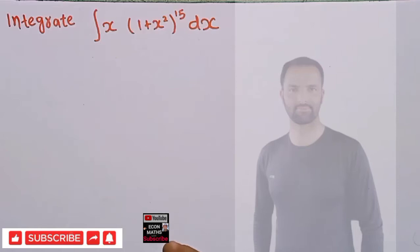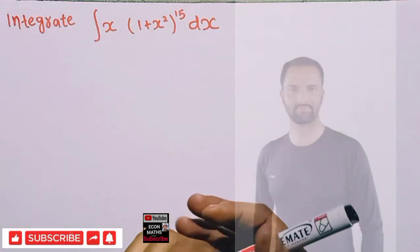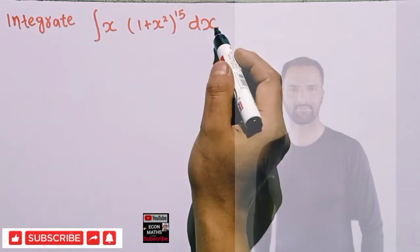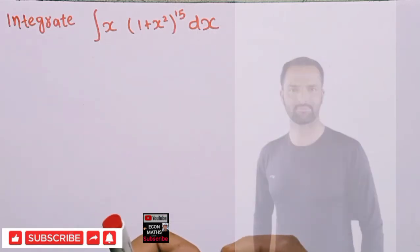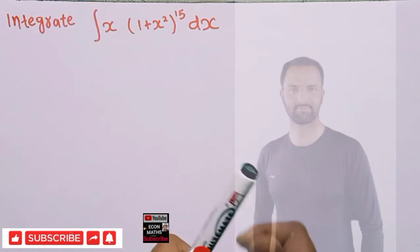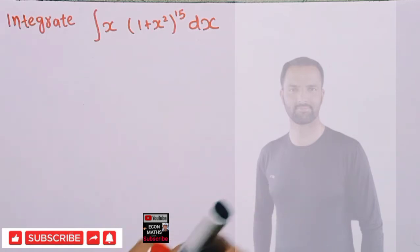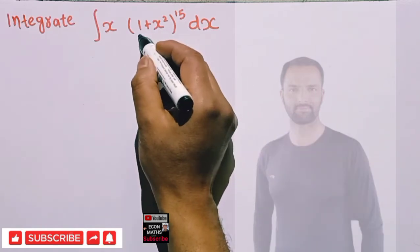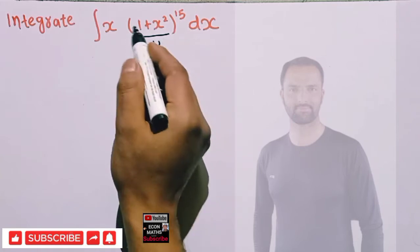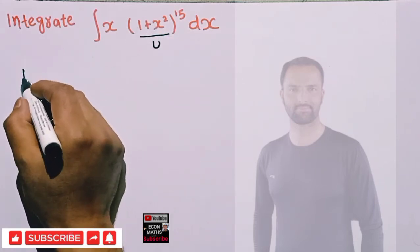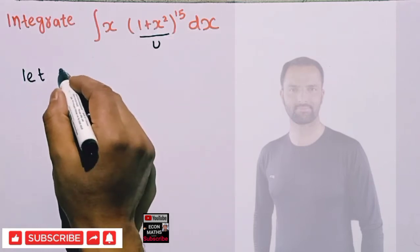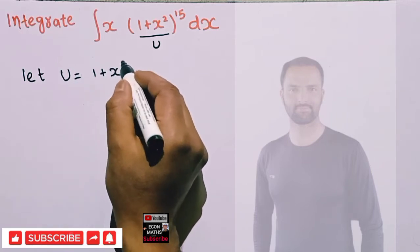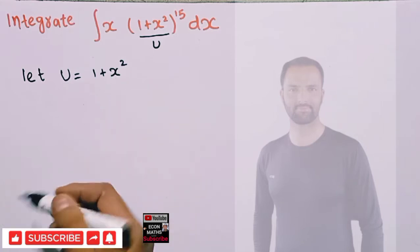In this video we will try to solve a problem asked by a friend, Harry Singh Rathod, regarding integration. The question is to integrate this function with respect to x. To integrate this function, we need to use the substitution method. Let's write 1 plus x squared is equal to u, so in place of this I will write: let u equal 1 plus x squared.